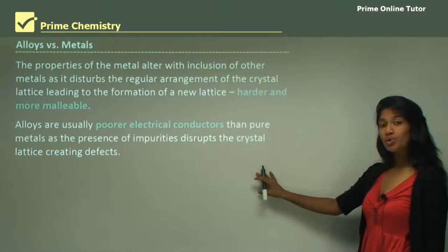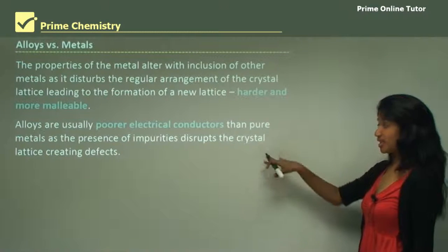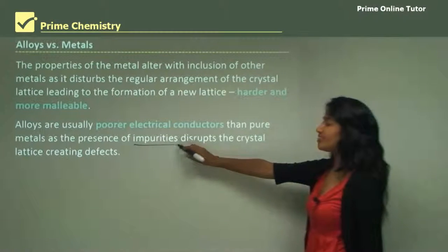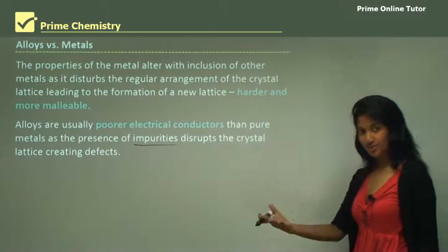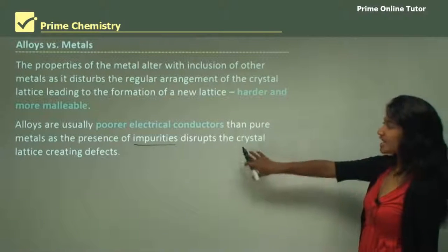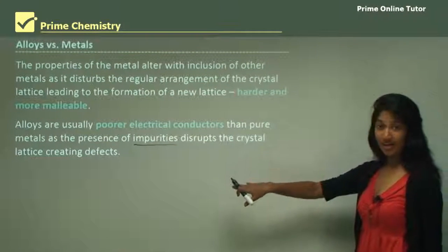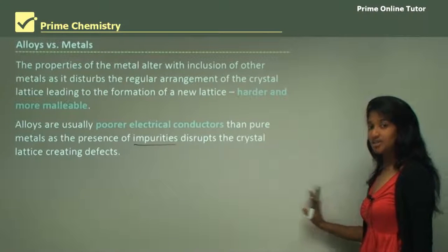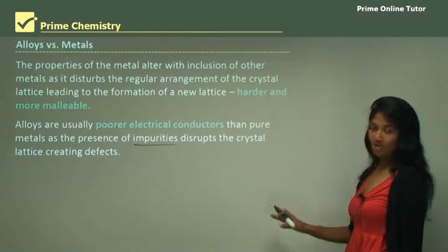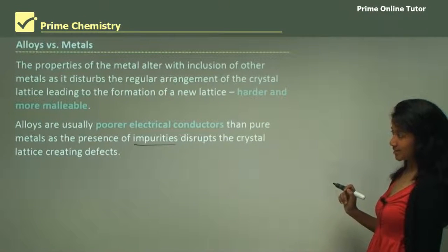Alloys are also poorer conductors of electricity. That is because of the presence of impurities — the other metals that are composing the alloy. It disrupts the crystal lattice, creating defects. So when charge carriers move in an alloy, they encounter many disruptions, and therefore it is a poorer electrical conductor.